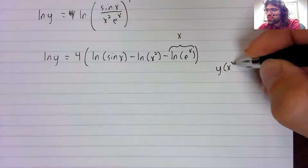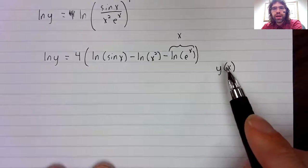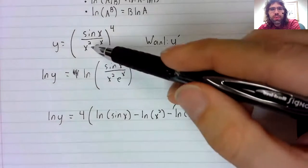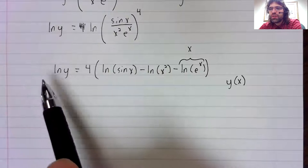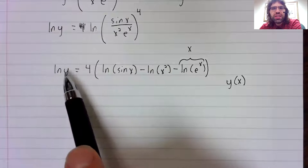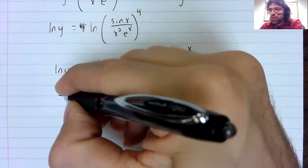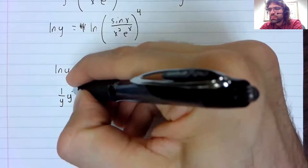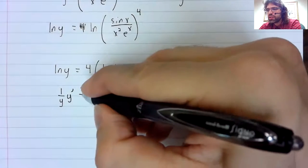Because when you do implicit differentiation, you treat y as a function of x. In fact, y is a function of x. If you've got the natural logarithm of a function, you need the chain rule: 1 over y, the derivative of the outside function, times the derivative of the inside function.